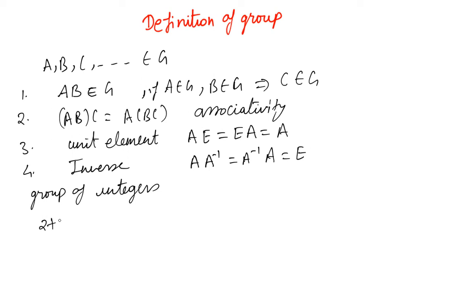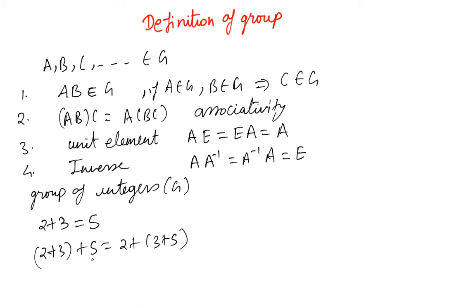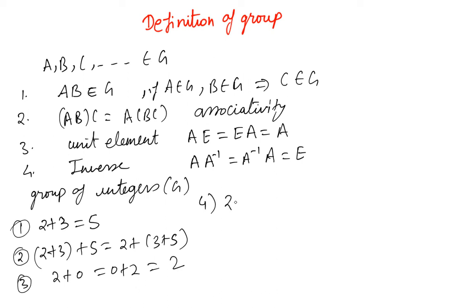For example, consider the group of integers under addition. Two plus three equals five, so if 2 and 3 belong to G, then 5 also belongs to G (closure). Also, (2+3)+5 equals 2+(3+5) satisfies associativity. The unit element is zero, since 2+0 equals 0+2 equals 2. The inverse of 2 is -2, since 2+(-2) equals (-2)+2 equals 0. The operation here is addition.